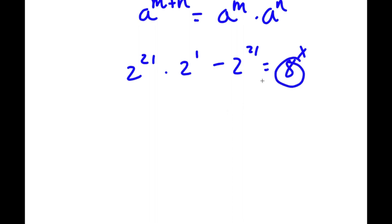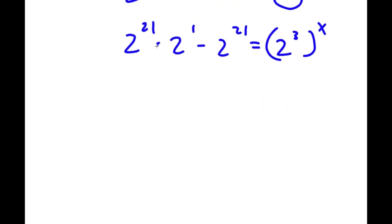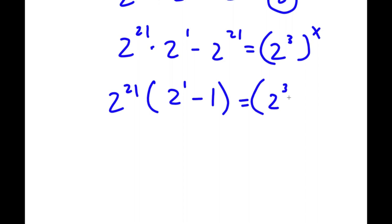8 is the same thing as 2 to the power of 3. So now I have 2 to the power of 21 times 2 to the power of 1 minus 2 to the power of 21 is equal to 2 to the power of 3 to the power of x. From my left-hand side, if I factor out 2 to the power of 21, I get 2 to the power of 21 times (2 to the power of 1 minus 1) is still equal to 2 to the power of 3 to the power of x.